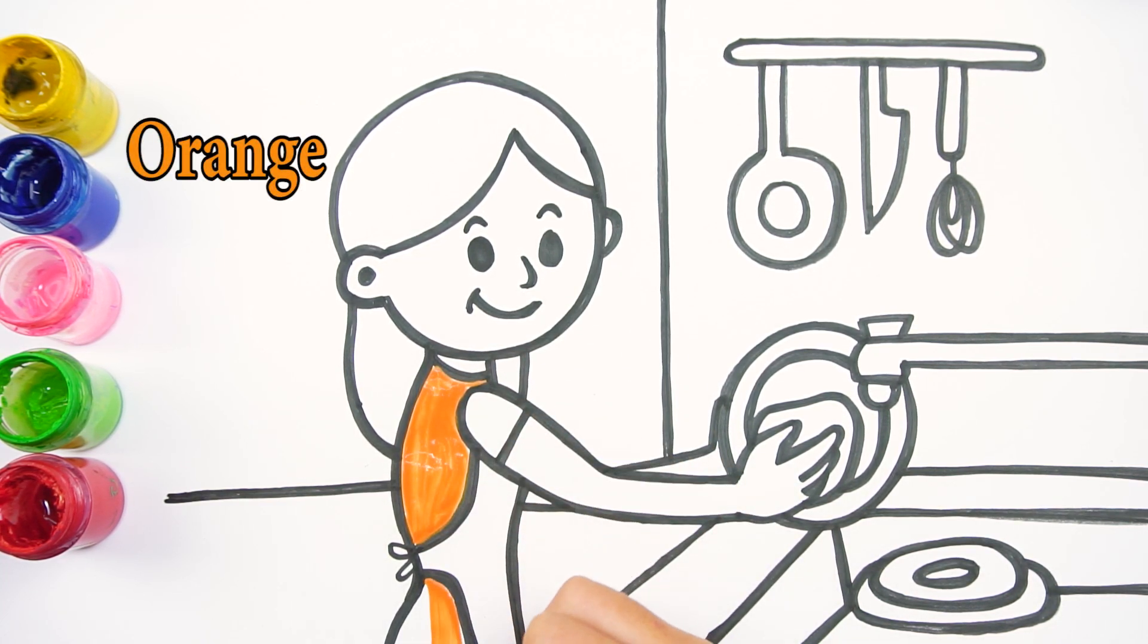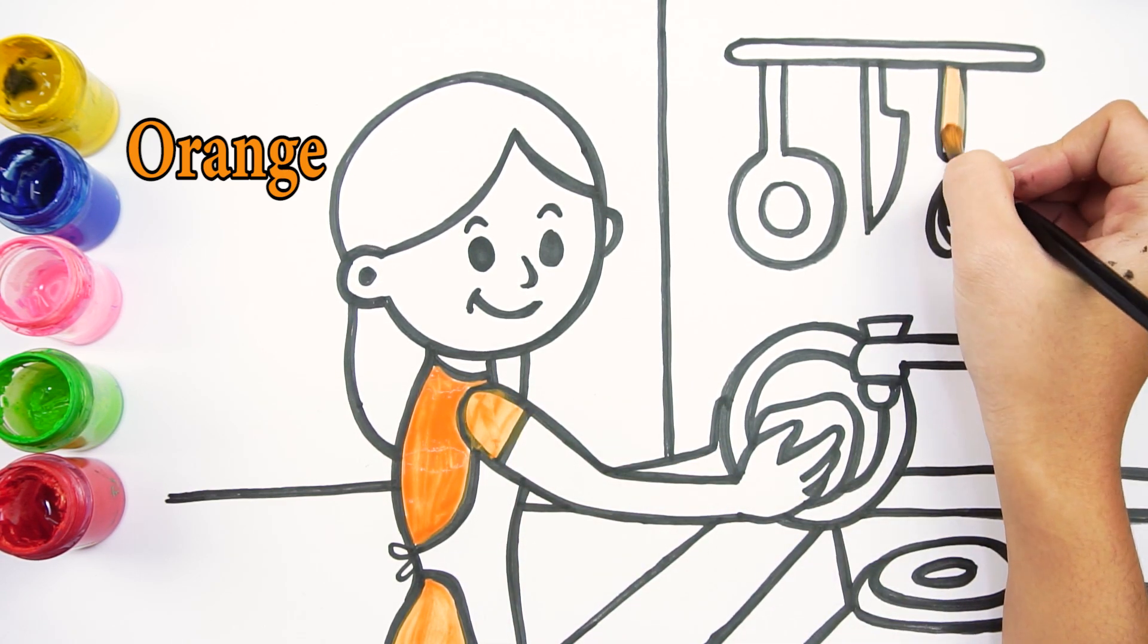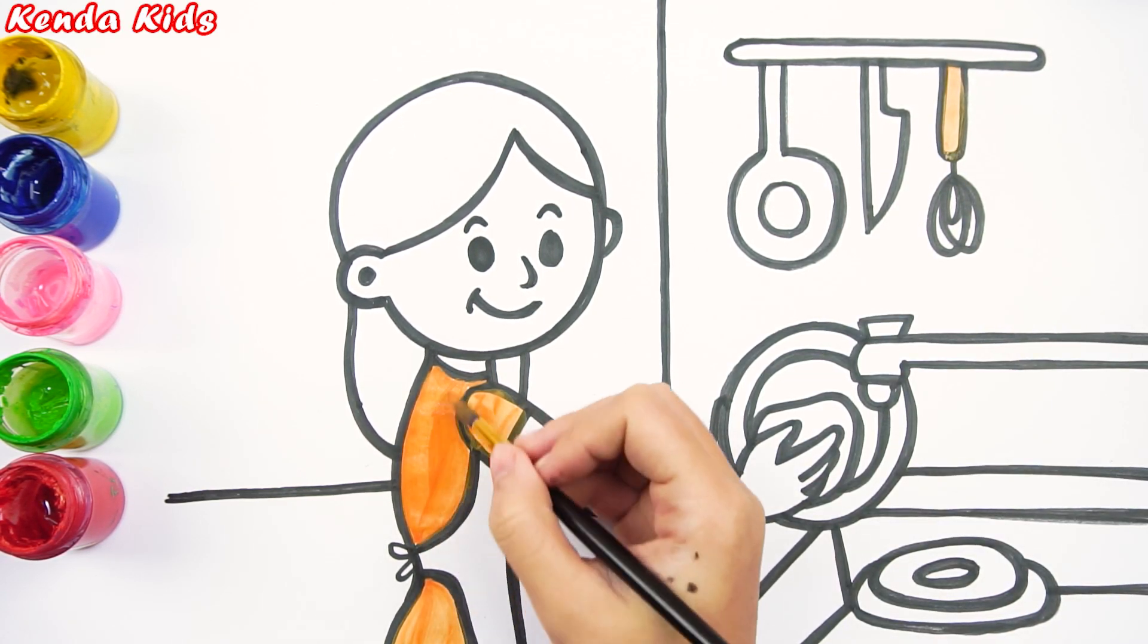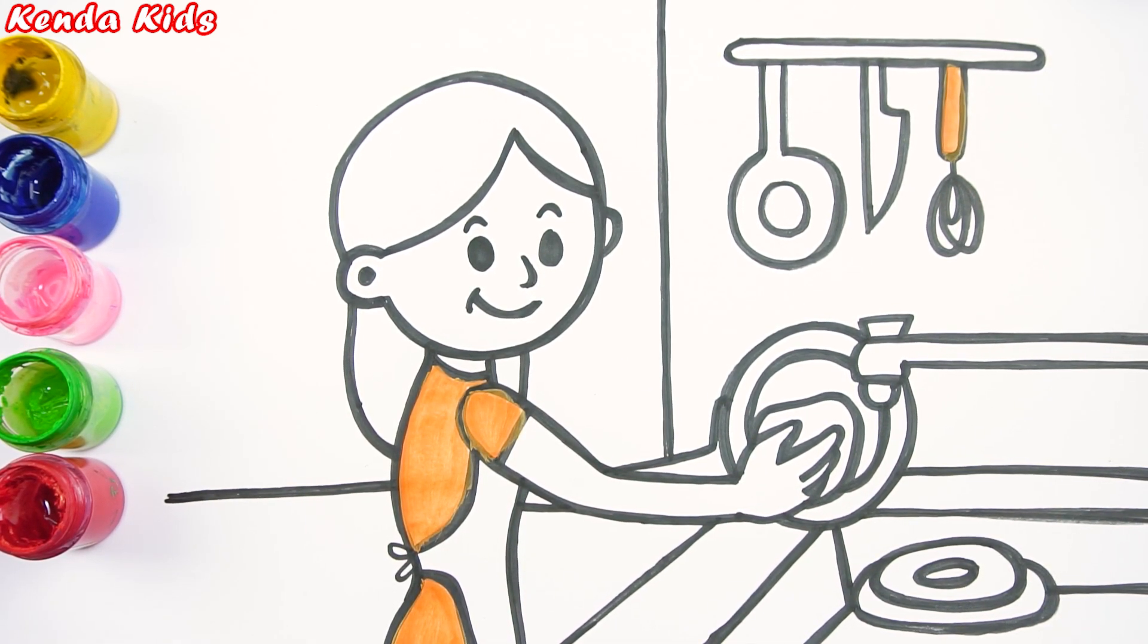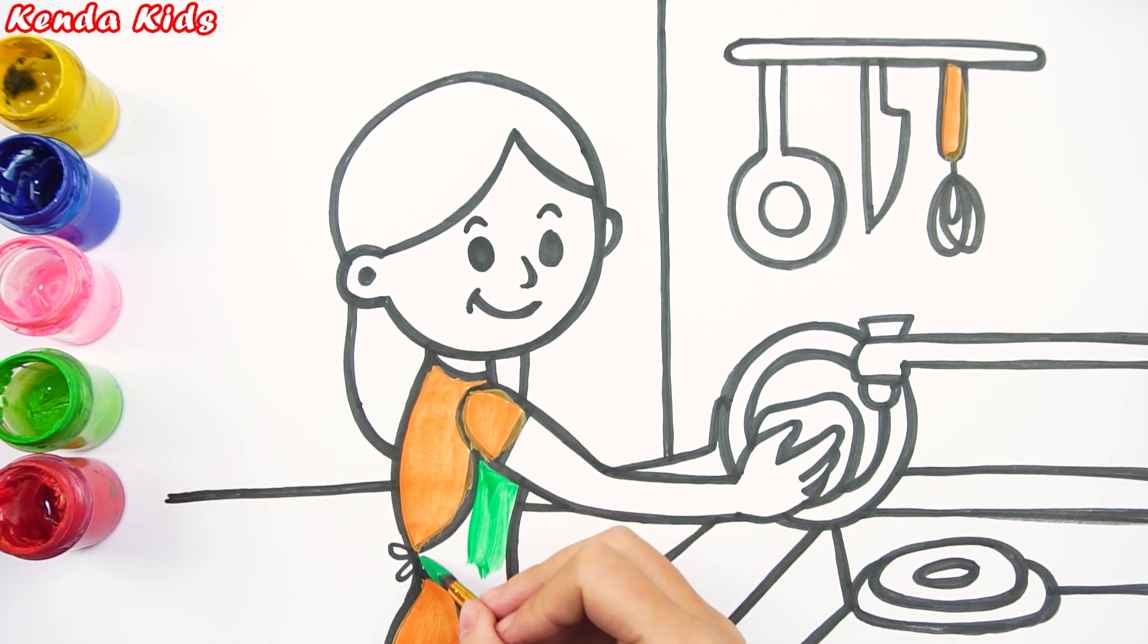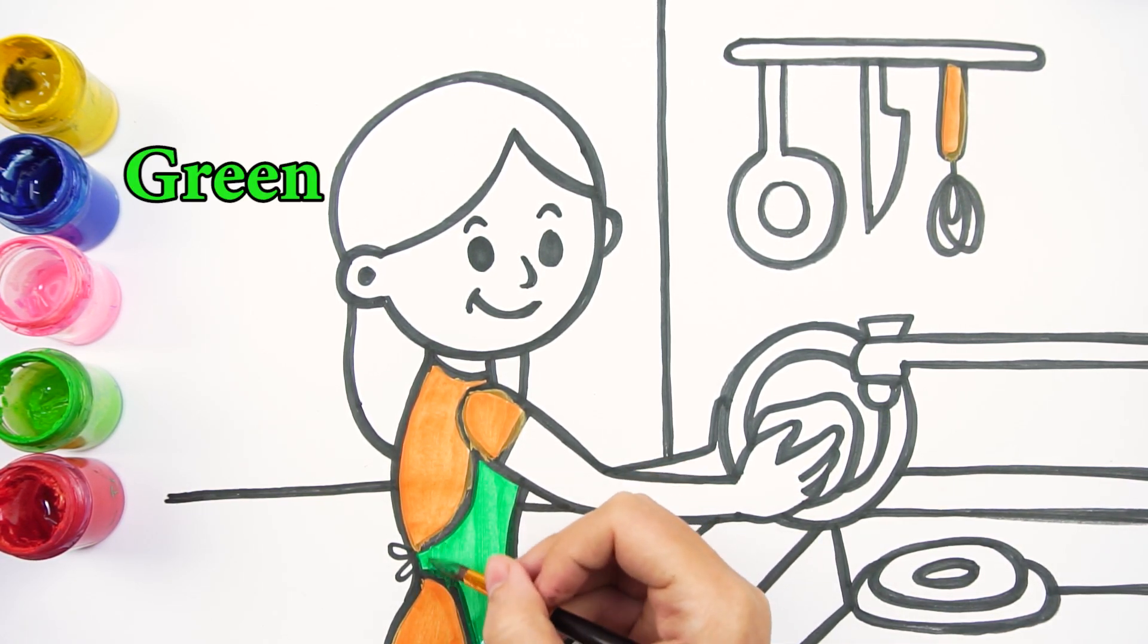For the back side of our girl's shirt and the apron, I will color orange. For her apron, the dish and hanging bar, I will color green.